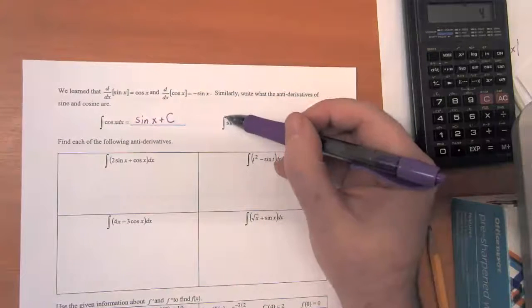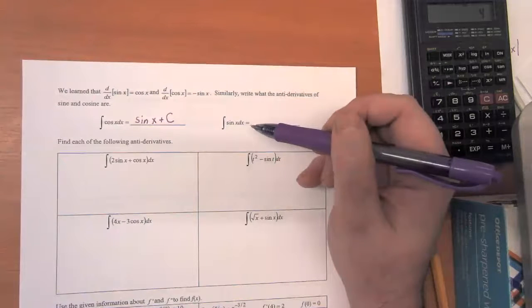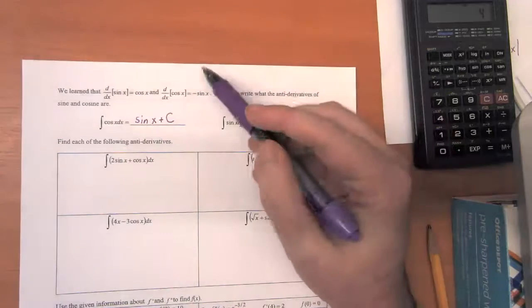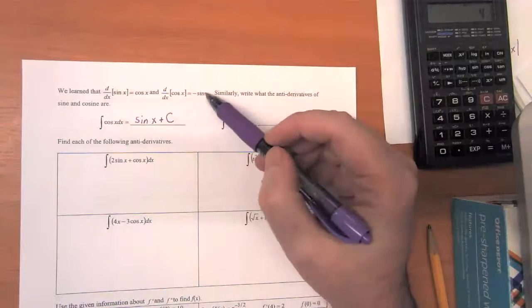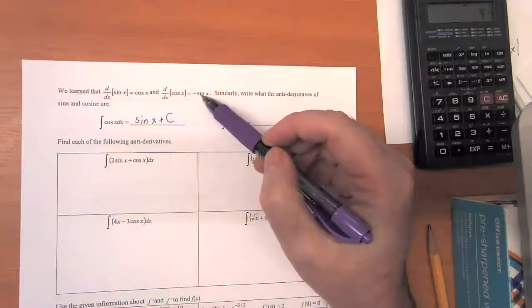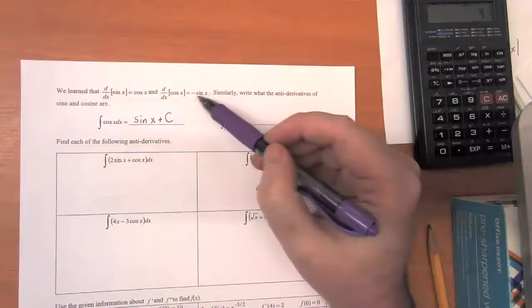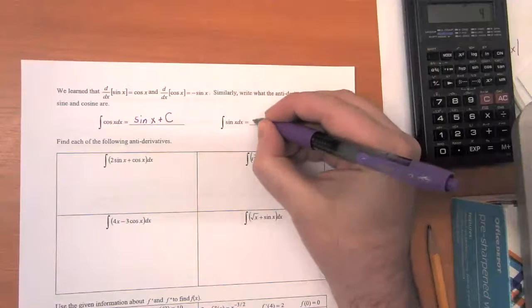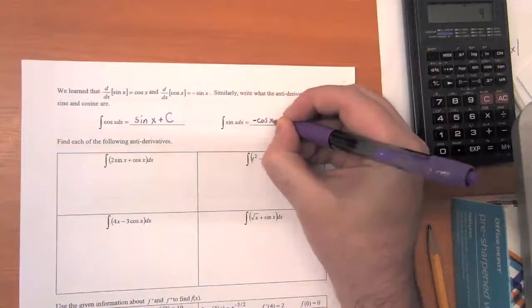What about the antiderivative of sine of x dx? Well, it's not cosine of x because remember, the derivative of cosine would be negative sine. So in order to get that negative to go away, we need to take negative cosine of x.